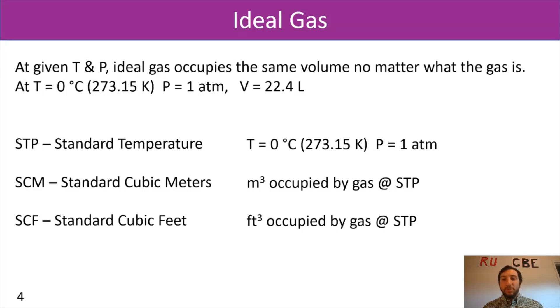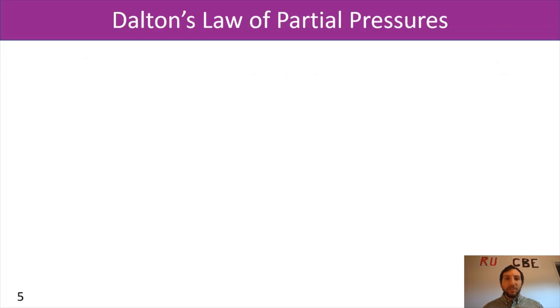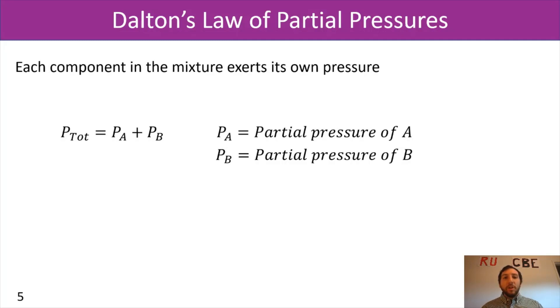We're going to now jump into Dalton's law of partial pressures. Dalton's law says that each component in the mixture exerts its own pressure. And what ends up happening is that our total pressure is going to equal PA plus PB. So the partial pressure of A plus the partial pressure of B. It's accounting for all the contributions from all your chemical species.